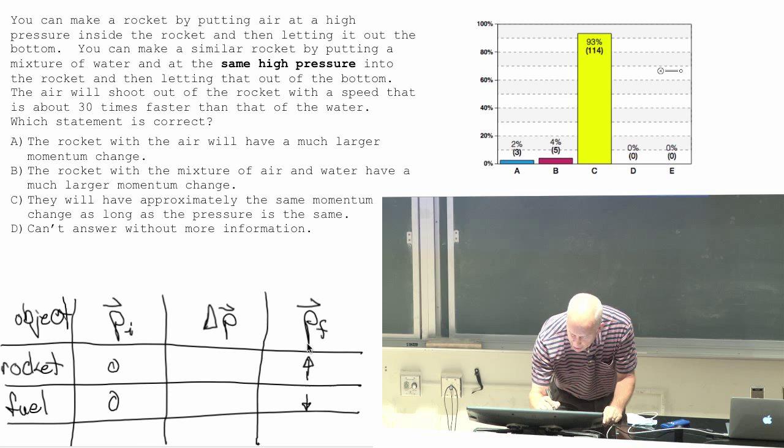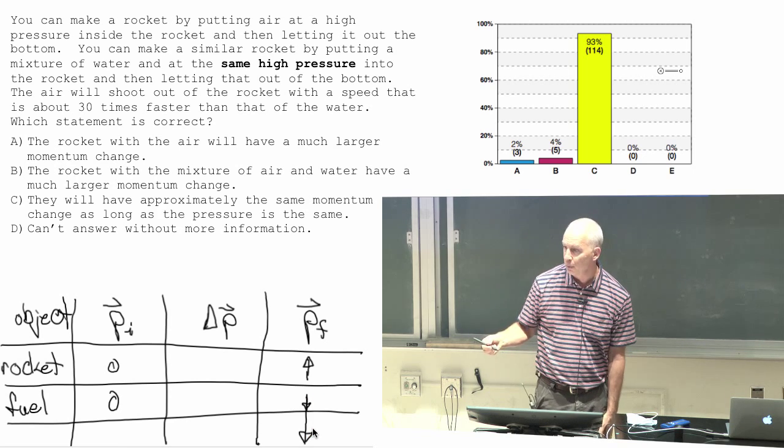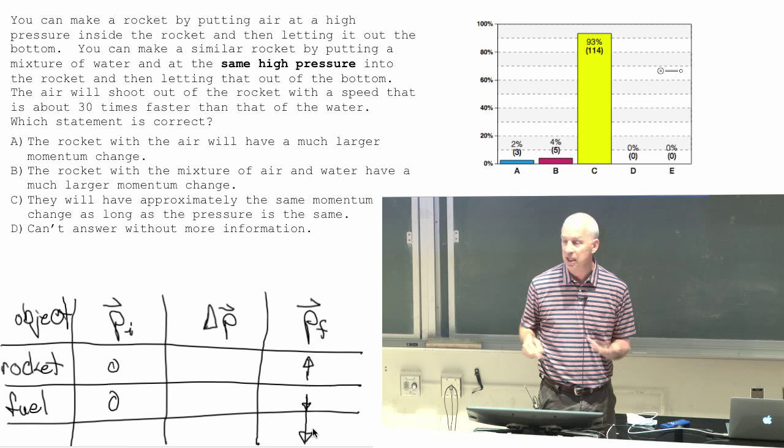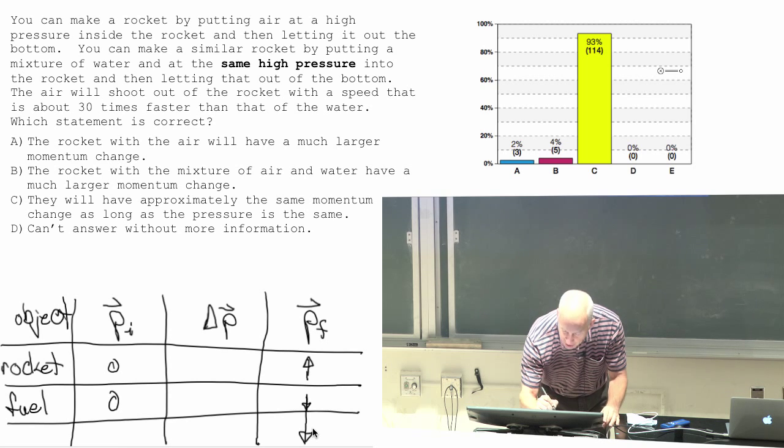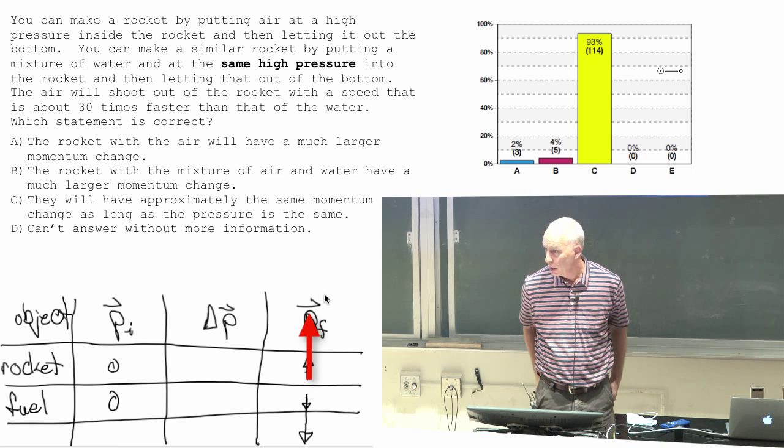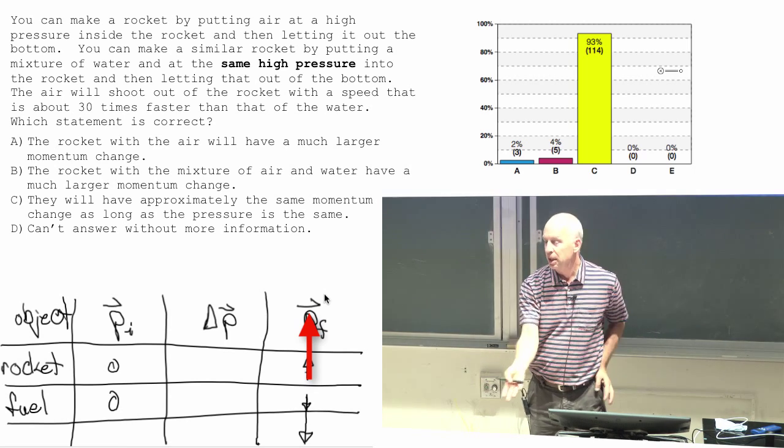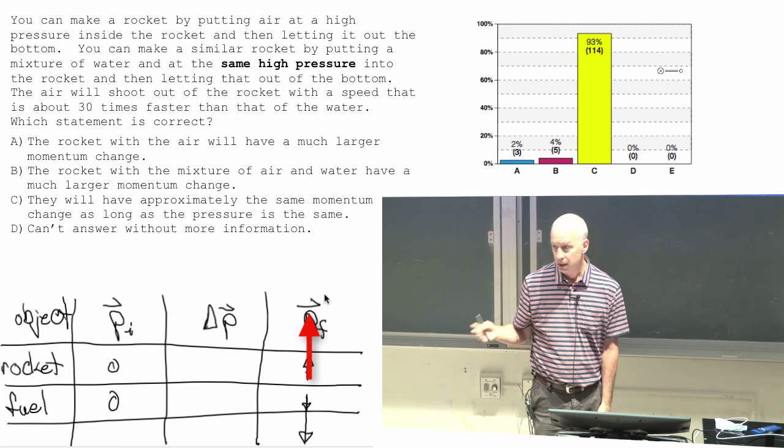But what if the fuel had a much bigger mass, so its final momentum, because its mass is so big, the final momentum downward is big. Then the final momentum of the rocket would be similarly big. And the rocket's mass, while the rocket's mass is important, it didn't change in the two situations.